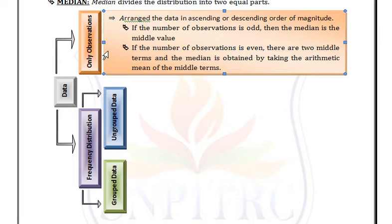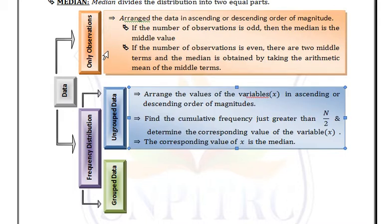In frequency distribution for ungrouped data, arrange the values of the variable in ascending or descending order of magnitude. Then find the cumulative frequency just greater than N/2 and determine the corresponding value of the variable X. This value X is the median.